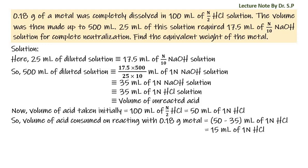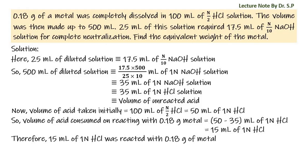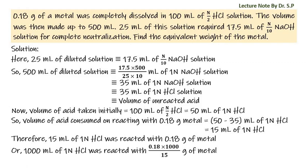Therefore, 15 ml of 1N HCl was reacted with 0.18 grams of metal, or 1000 ml of 1N HCl was reacted with 0.18 times 1000 by 15 grams of metal, that is equal to 12 grams of metal. Hence, equivalent weight of metal is equal to 12 grams.